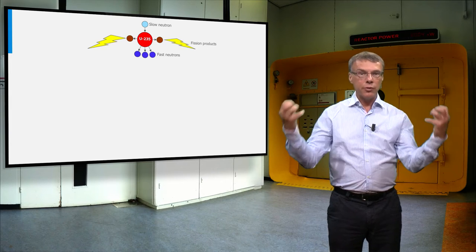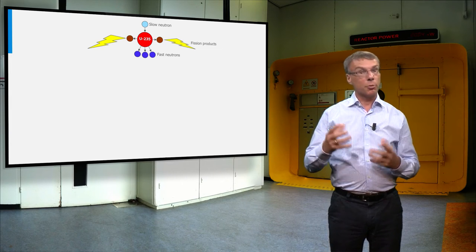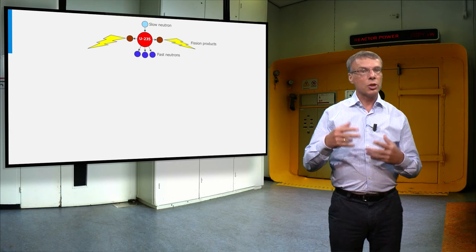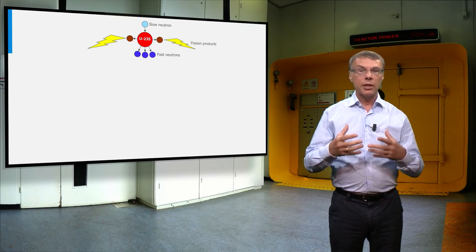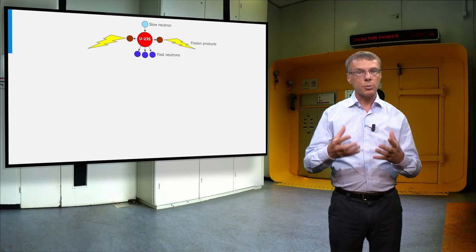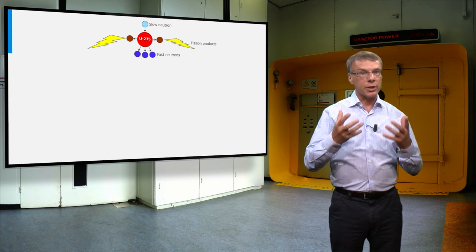In this process two fission fragments are produced, the brown bullets, and on average 2.5 fission neutrons. The probability for a fast neutron to be absorbed by another uranium atom is very small.